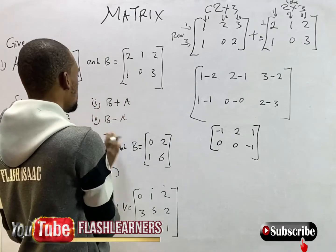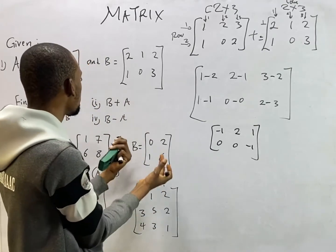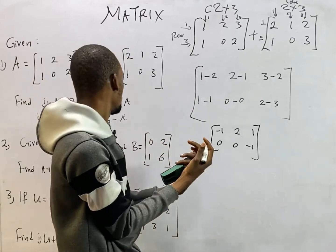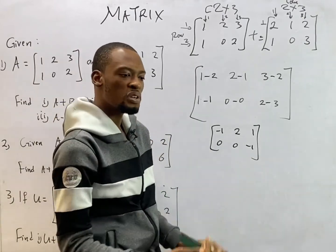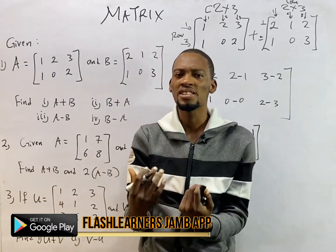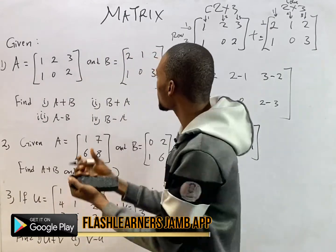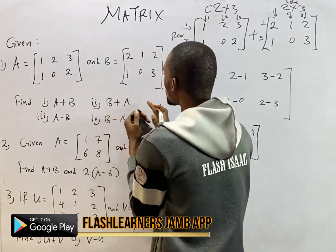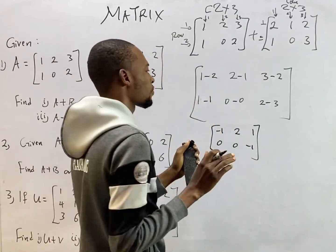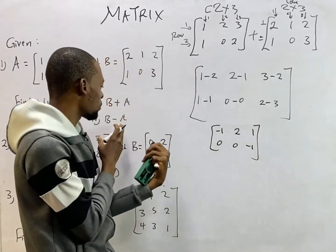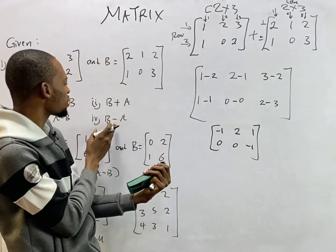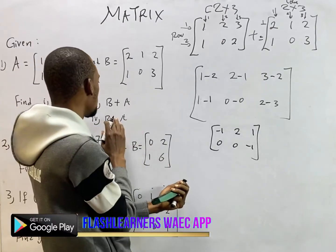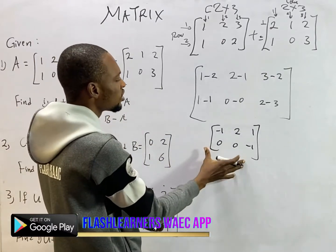We solved for A plus B and A minus B. For the reverse: B plus A gives the same result as A plus B because addition of matrices is commutative — matrix A plus matrix B equals matrix B plus matrix A.